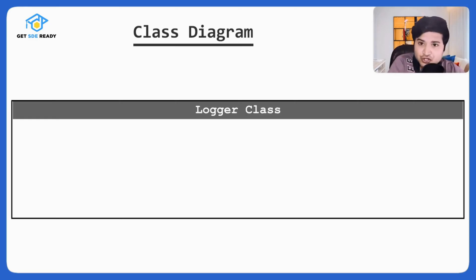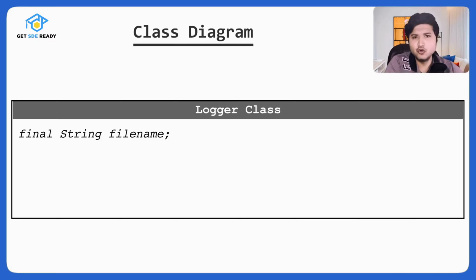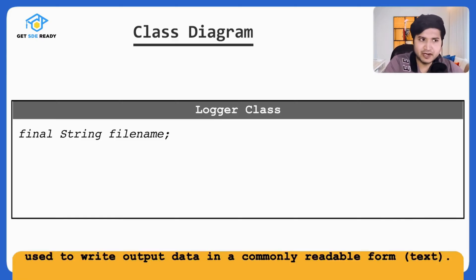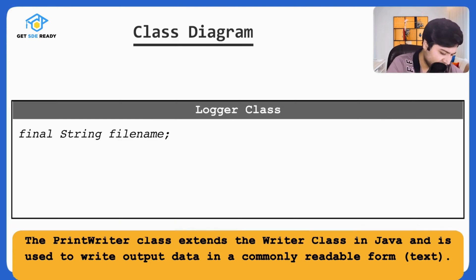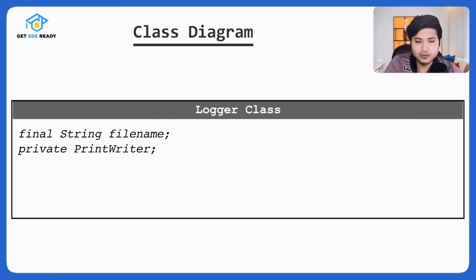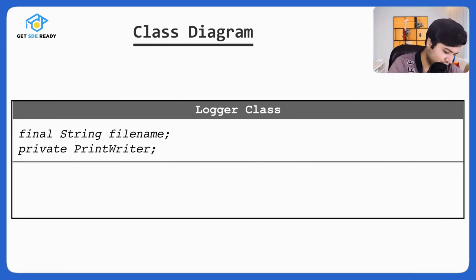The Logger would have a file name where it logs. The file name would be constant since we want to log everything to a single file, so we'll make it final — a final String fileName. To write to a file, we'll use PrintWriter, a library that allows us to write into a file and also provides formatting features. It will have a private PrintWriter instance. Of course, a constructor will also be there.